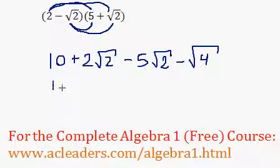So we get 10 plus, or actually, one second. Here we have 2 root 2 minus 5 root 2. They're both root 2, so we can combine the numbers. 2 minus 5, negative 3 root 2.